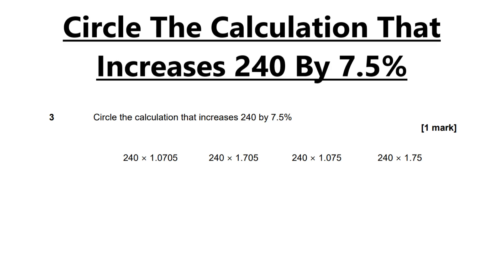So how would I tackle this problem? Increase 240 by 7.5%. Now there's a few ways you could do this. You could work out the easy ones and remove them if they're not correct, or you could times the decimal by 100 to turn it into a percentage. My approach is slightly different — this is just how I naturally approach problems like this. Give it a try, and if you don't like it, I can redo it with a different method.